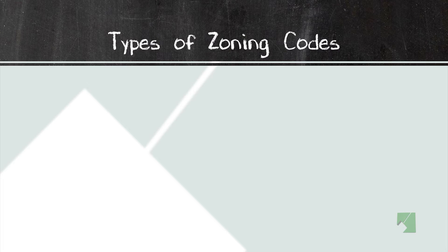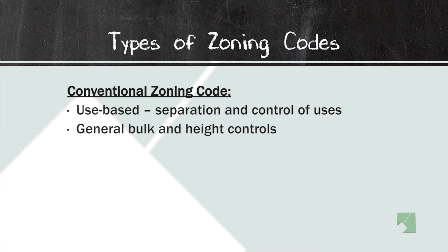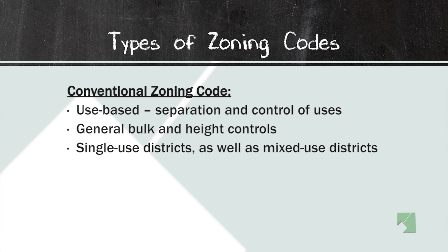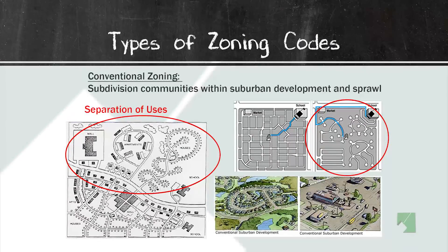There are different types of zoning code. Conventional zoning code is use-based — meaning separate uses. You would want to separate industrial uses from residential uses, for instance. Conventional zoning codes often have regulations about the bulk and height of buildings in particular districts. They may have single-use districts, like residential, or mixed-use districts. They often have development and design standards, and most conventional zoning codes have parking standards. A conventional zoning code would result in your traditional subdivision — one with maybe one or two entry or exit points that is very self-contained.